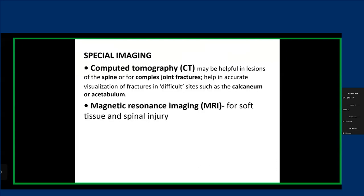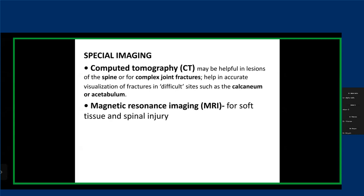For further imaging, we can do CT scans and MRIs for certain sites that are too complex to assess with an X-ray — for instance the pelvis, the spine, the calcaneum. We need CT imaging to describe the fracture well, visualize it, and make management decisions. MRI is a good tool for soft tissue issues and spine injuries, but it's not an imaging modality we order left and right.